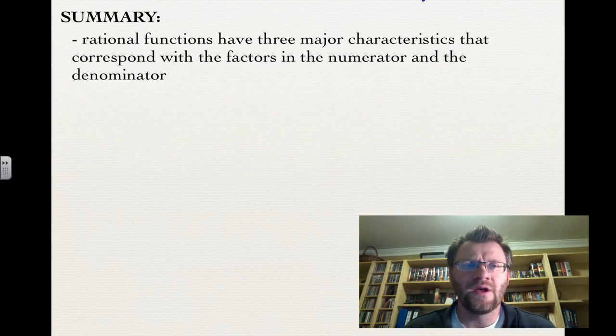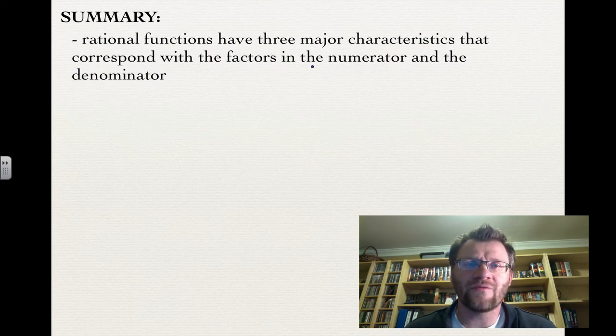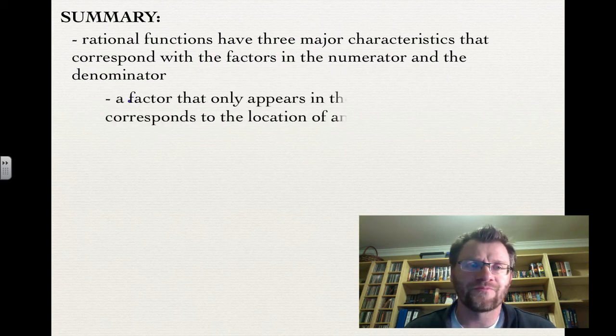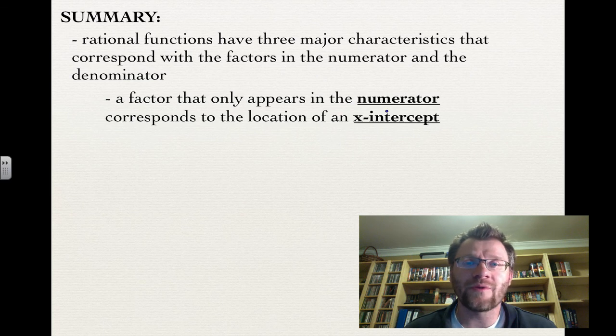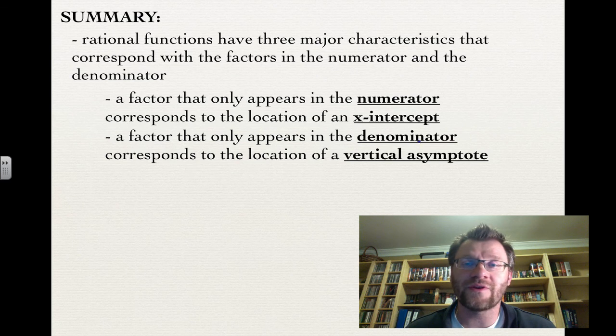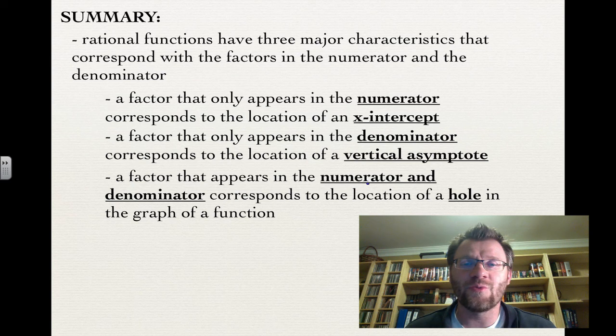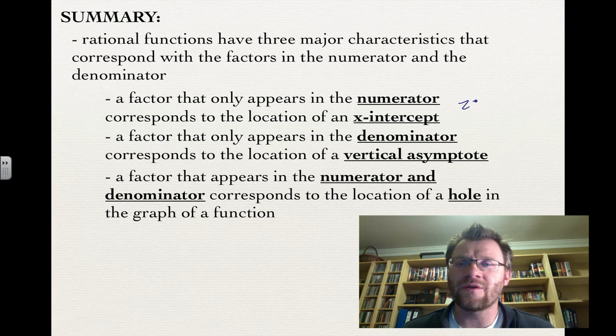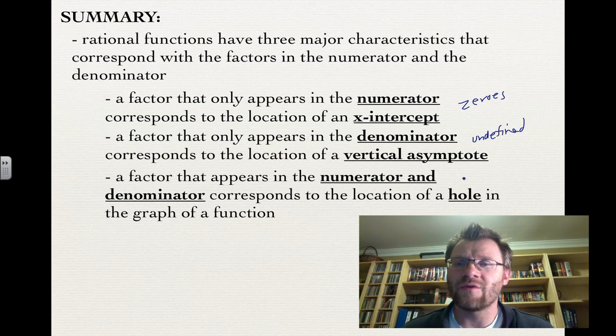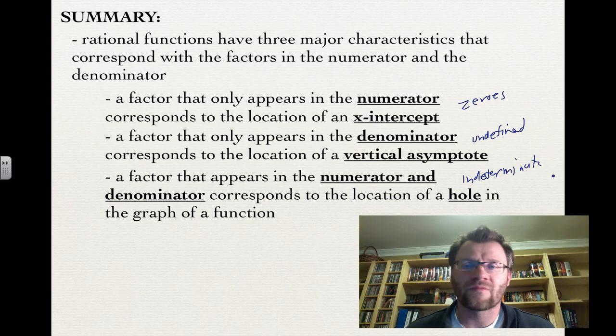So in summary, rational functions have three major characteristics that correspond with factors in the numerator and denominator. Number one: a factor that only appears in the numerator corresponds to an x-intercept. Number two: a factor only in the denominator corresponds to a vertical asymptote. Number three: a factor in both corresponds to a hole in the graph. We call these zeros, undefined values, and indeterminate.